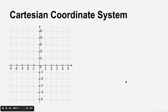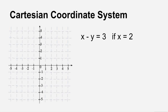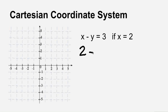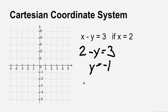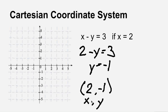When you're graphing equations, if you have the equation x minus y equals 3 and you're supposed to find the value of y when x equals 2, you plug in 2 for x. So you have 2 minus y equals 3, and then you solve for y to get y equals negative 1. When you solve an equation that is going to be a function or relation, you want to write the answer as an ordered pair — written as x comma y in alphabetical order, so this would be expressed as (2, -1).